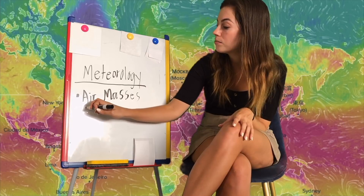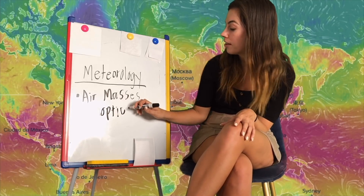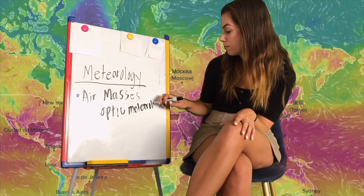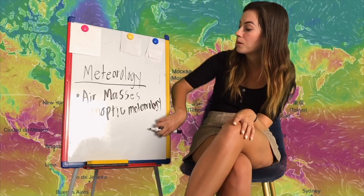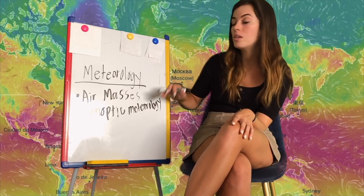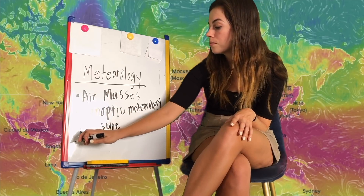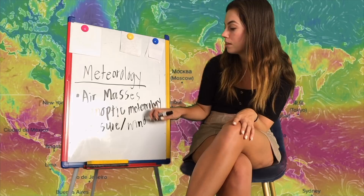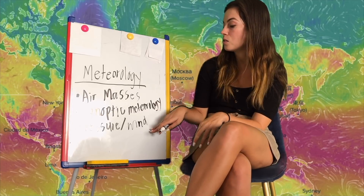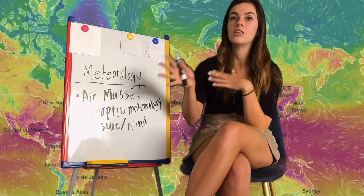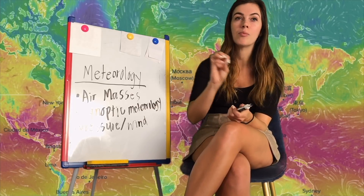We've also got synoptic meteorology. What that is, is you've got kind of a focal point and you're looking at the pressure and wind. When you're thinking about that, you're also going to want to think about the origin of the wind and where it's starting, where it's coming from, and also the rotation of the earth and how that's going to affect the air masses, the pressure points, and where things are moving.